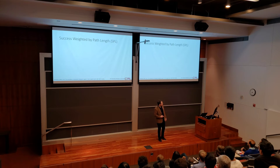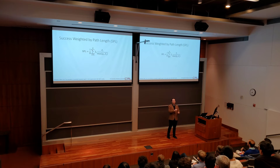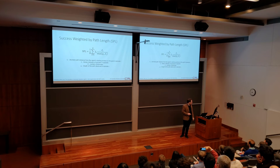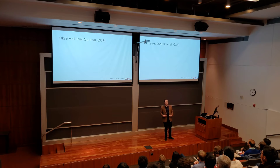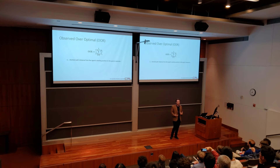Let's go over the results metrics. Success Weighted by Path Length (SPL) finds the ratio of optimal to observed path length for successful trajectories divided by the total number of episodes — the maximum achievable is one, and higher is better. Another metric is observed over optimal path length, which gives a more intuitive measure: for successful trajectories, how much longer was the observed path compared to the optimal path?